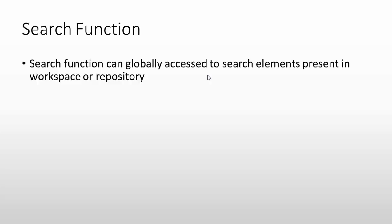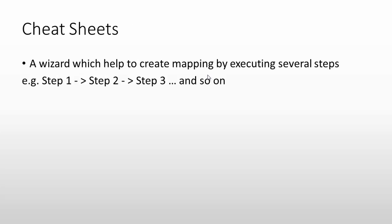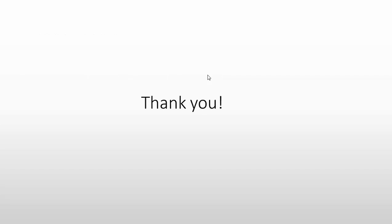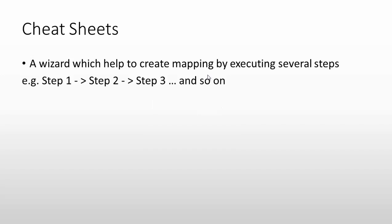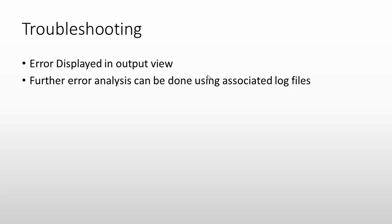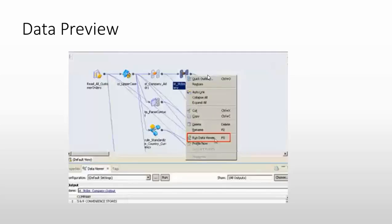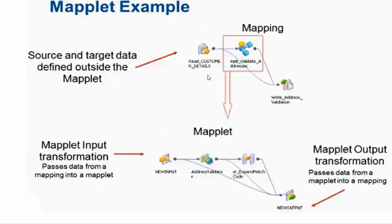The IDQ developer tool also has a search functionality to locate various components in the workspace or repository — search can globally access any element. There are also cheat sheets, which are wizards that help create a mapping by executing several steps — you click through step one, step two, and so on to build the mapping. These are the key details about the Informatica Data Quality developer tool. A demonstration will be covered in an upcoming video. Thank you for watching — please comment any questions below and subscribe for more IDQ updates.